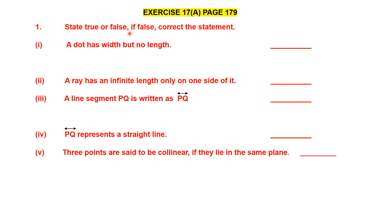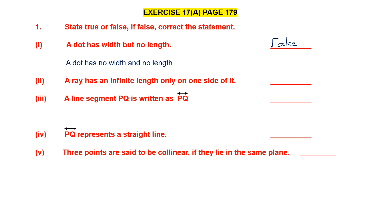State true or false. If false, correct the statement. The first statement: a dot has width but no length. We are talking about a point — the fundamental concepts in geometry: point, line, line segment, ray. This statement is false because a dot has no width and no length. Here it says it has width, whereas a dot has no width and no length. So this statement is false and we have corrected the statement.